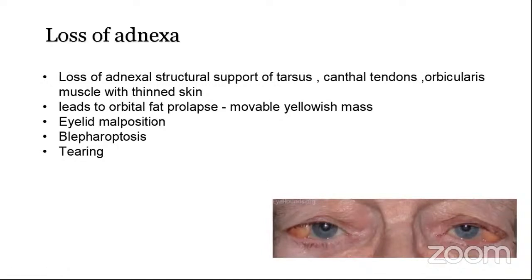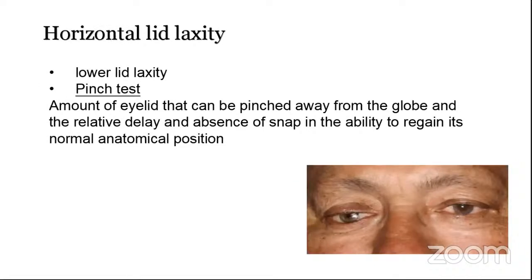Another change is eyelid malposition — the eyelid moves from its original position. This includes blepharoptosis, drooping of the eyelid, and excessive tearing. There is also horizontal lid laxity, meaning the lid becomes overly flexible and changes from its original position, mostly seen in the lower eyelid. This can be tested using the pinch test: we pinch the lower eyelid, move it away from the globe, and assess the relative delay and absence of snap in the lid's ability to regain its normal anatomical position. The time it takes to return to its original place determines the amount of lid laxity present.